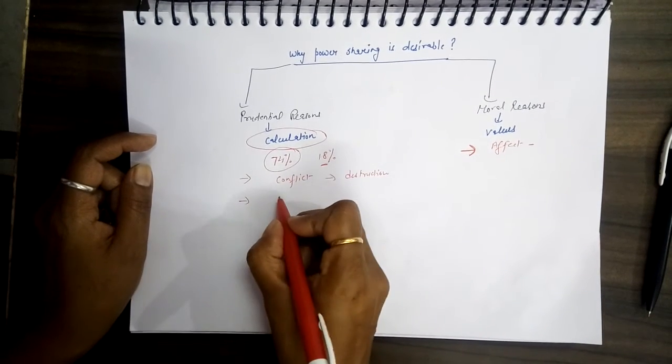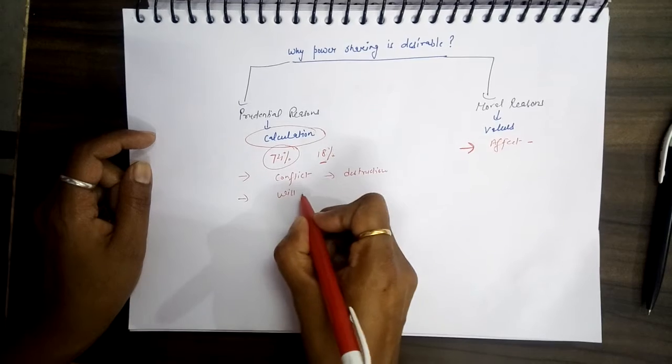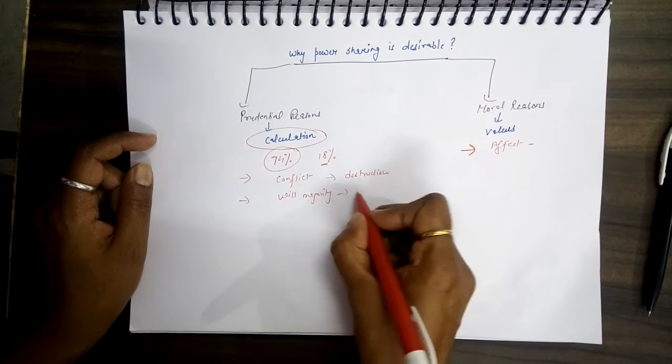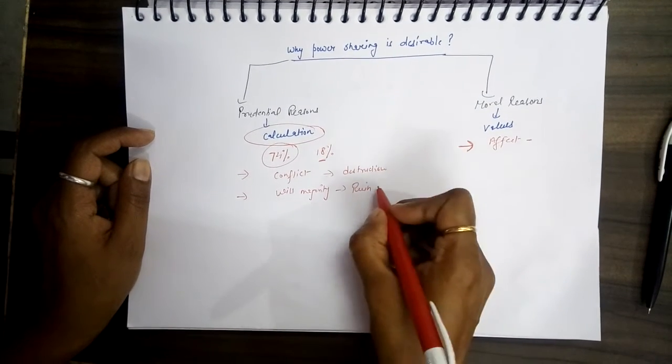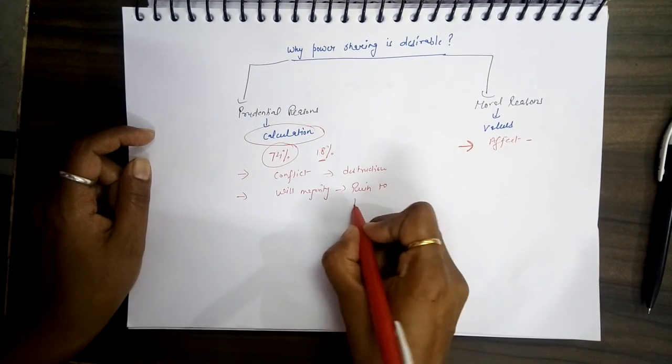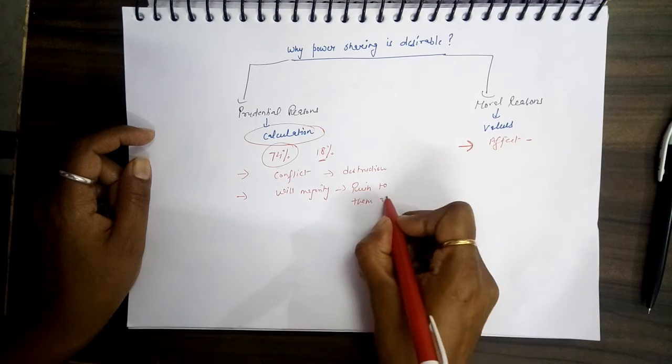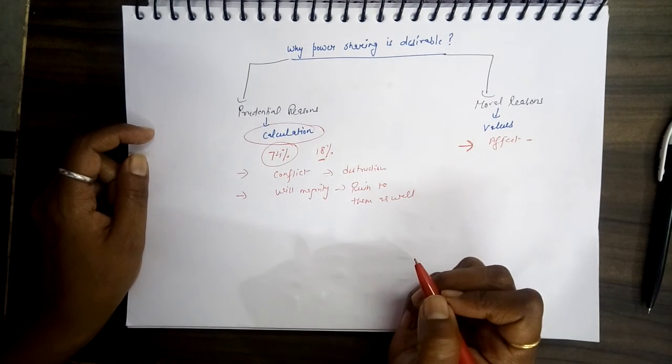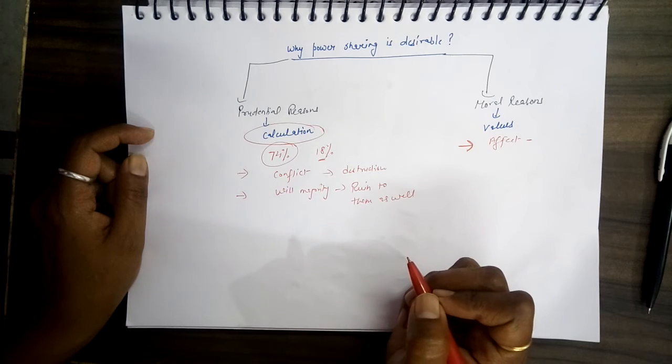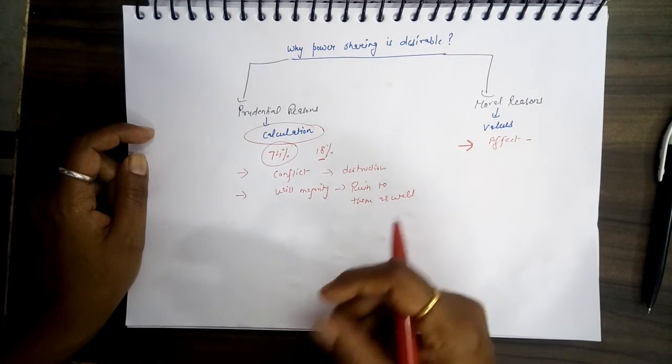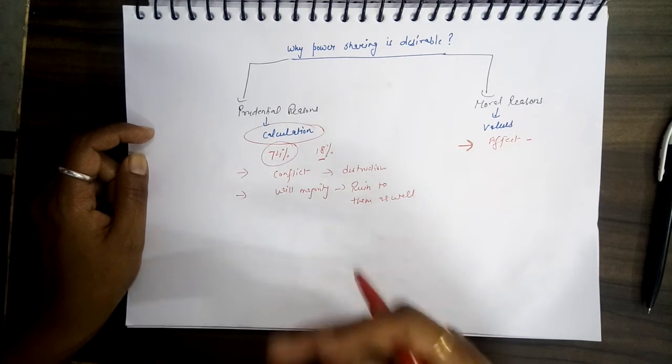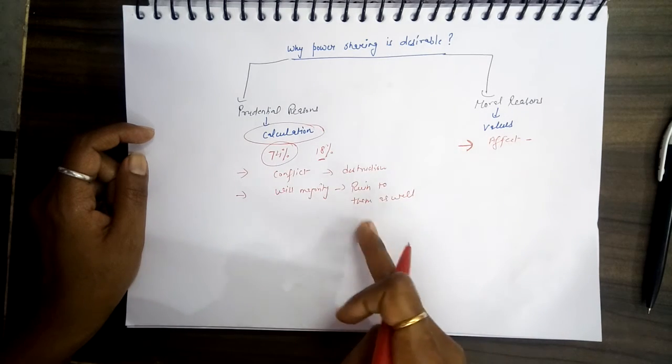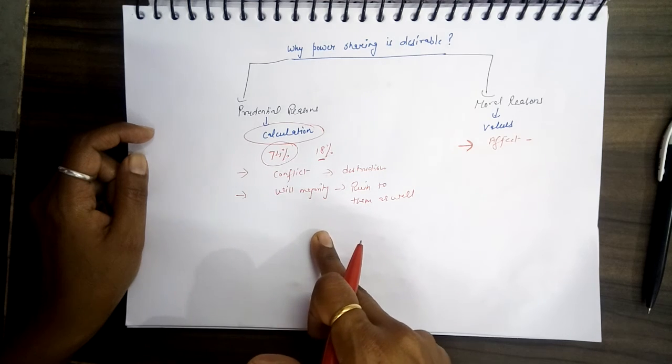And one more thing: the will of the majority means it will only think of majority people and will bring ruin to the minority as well. In the long run, if we neglect minority people, thinking they are very small or ignoring them, this is not right. That brings ruin to the majority as well. So there are two sets of reasons why we should share power.